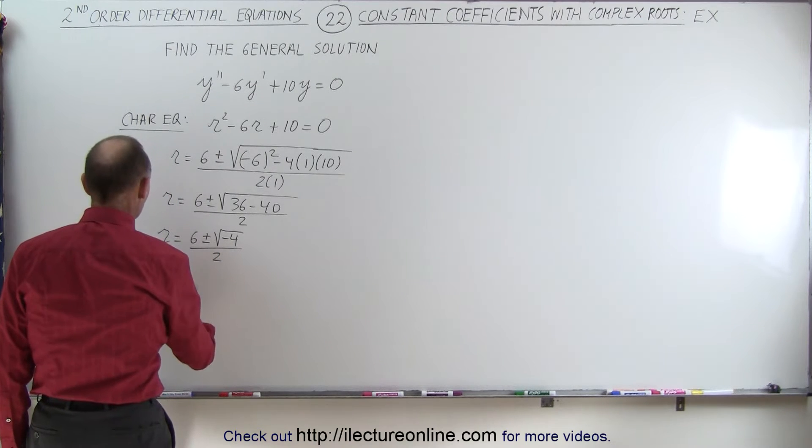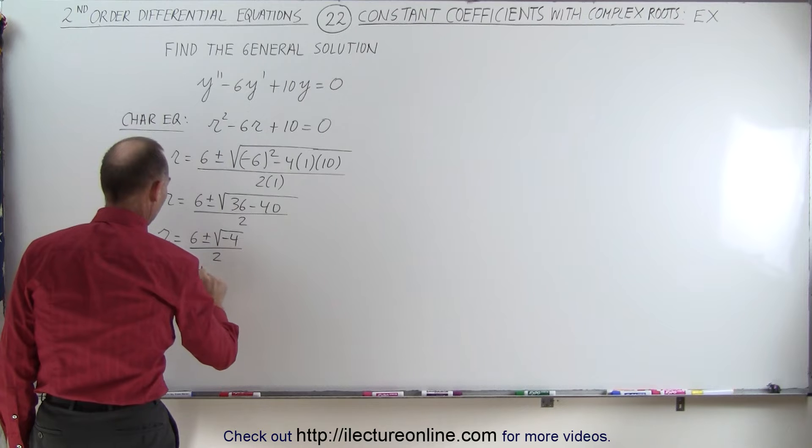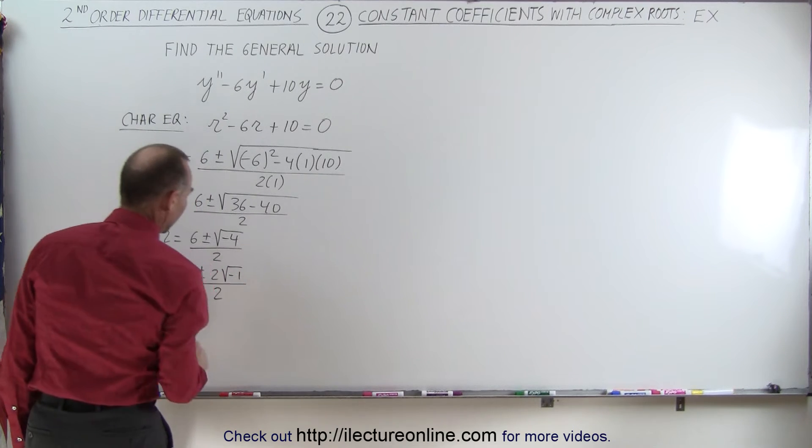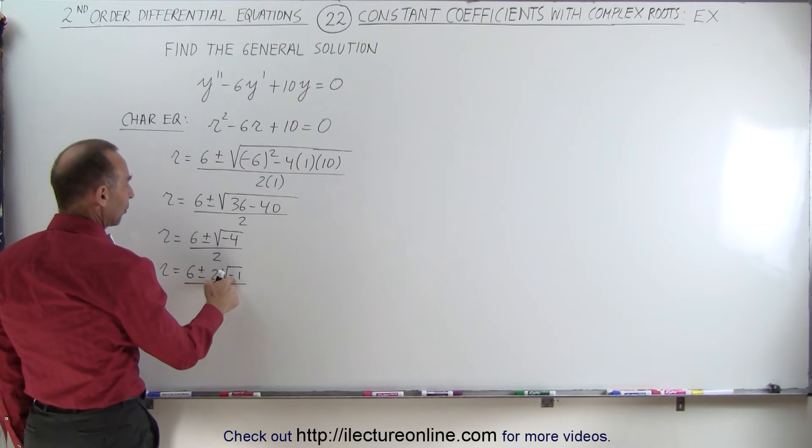Simplifying this a little bit more, we get R is equal to 6 plus and minus 2 times the square root of negative 1 over 2. And of course, the square root of negative 1 is I.